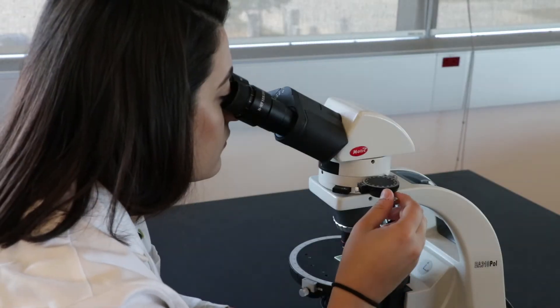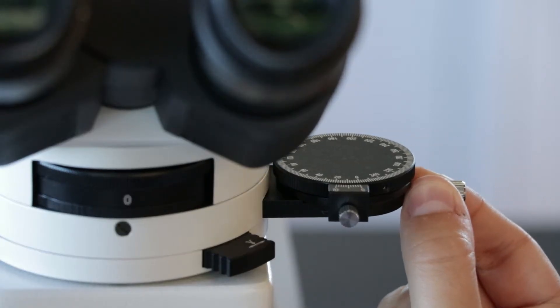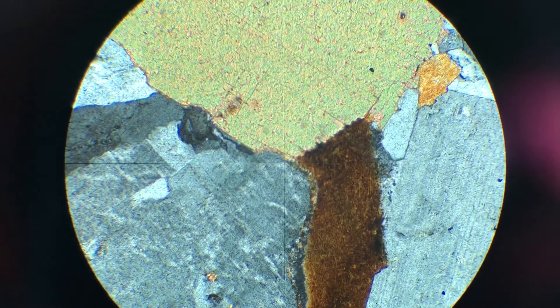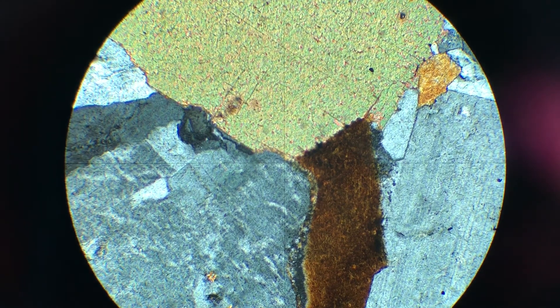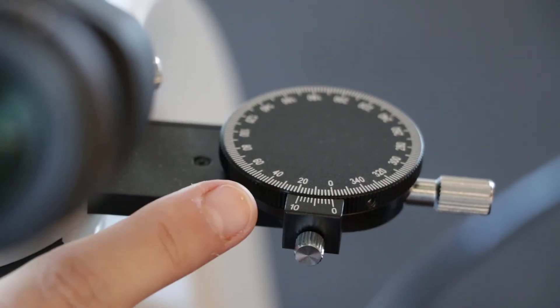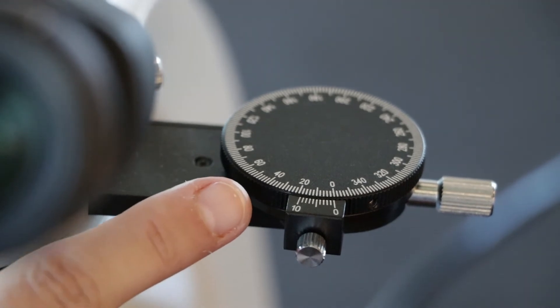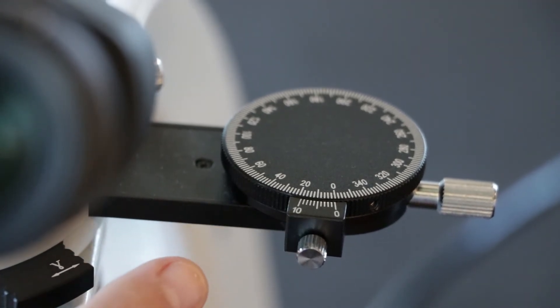The upper polarizer, also known as the analyzer, must be pulled out to the right to engage. The analyzer has an adjustment wheel on top, which should be set to 00. If not, ask the lab technician for help. Otherwise, do not touch it.